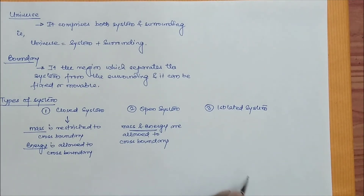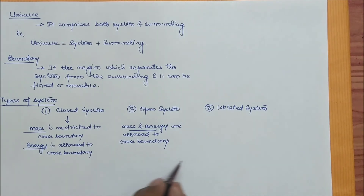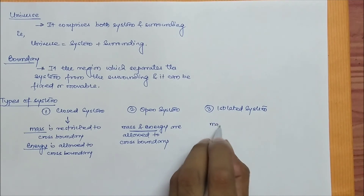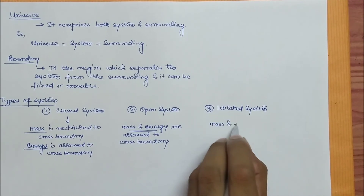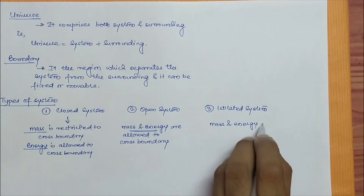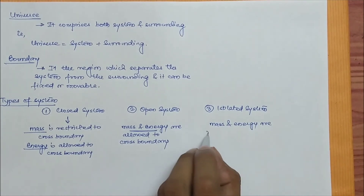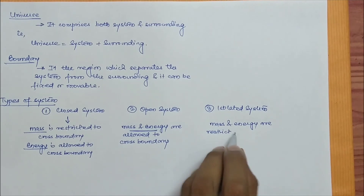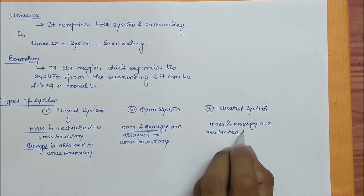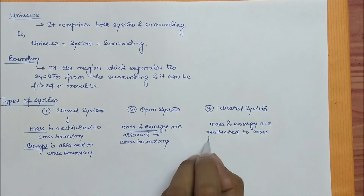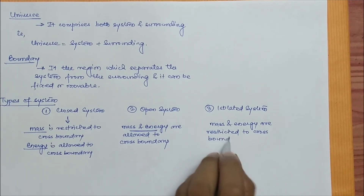And what is an isolated system? The isolated system is one where both mass and energy are restricted to cross the boundaries.